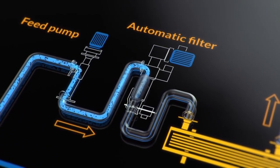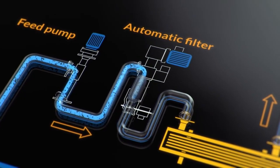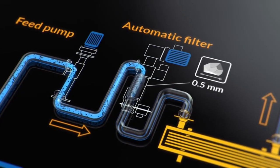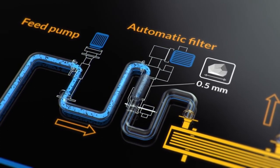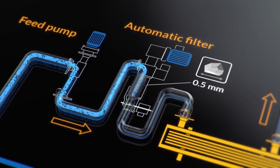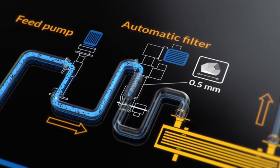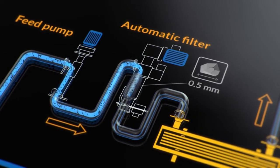This filter protects the disk stack of the separator bowl from solid particles larger than 0.5mm. A differential pressure switch controls the cleaning of the automatic filter, and the rate of the feed pump is controlled by the oil in water monitor.